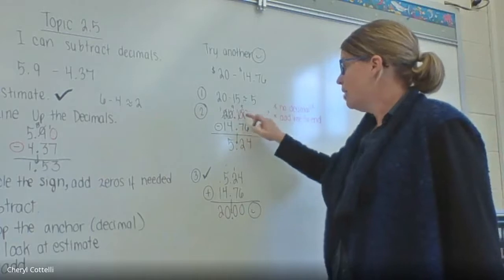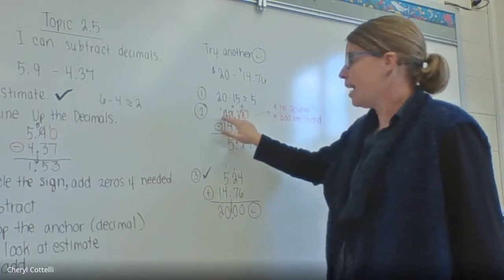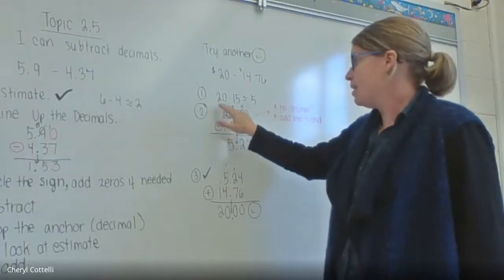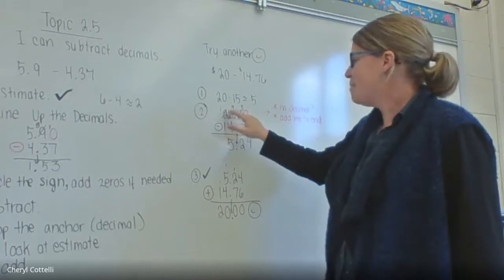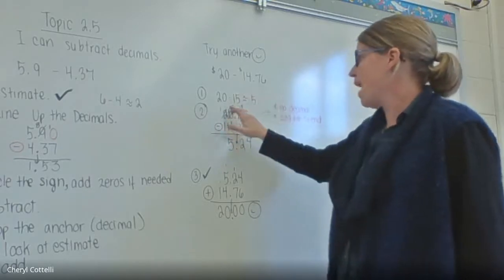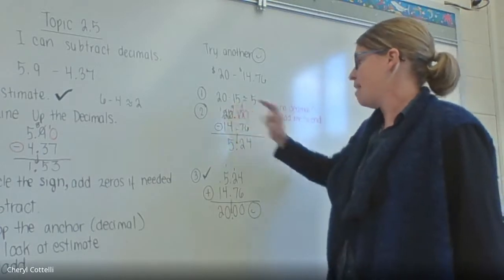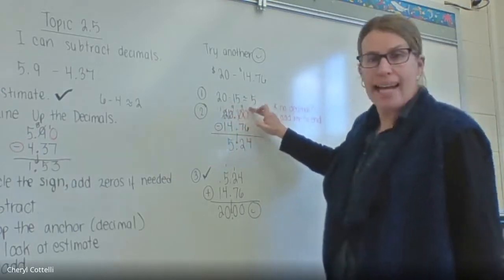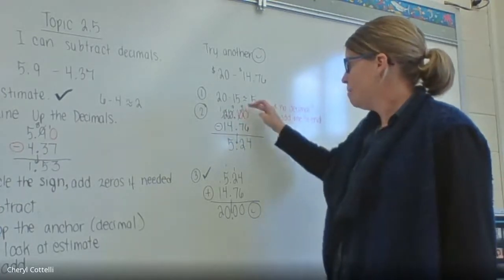We're going to have to borrow. There's nothing to borrow from here, nothing here. I've got to go all the way to 2 to borrow. That becomes a 1, and then I give it to this place, that becomes a 10. I'm going to borrow from that, becomes a 9, this becomes a 10. Borrow from that, that becomes a 9, so now I have something over here to borrow from.